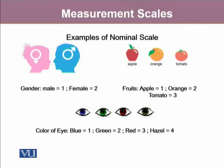Another example is eye color — it could be blue, represented as 1; green; red; or hazel. These could be assigned any number, but again, these numbers do not represent any magnitude of information.